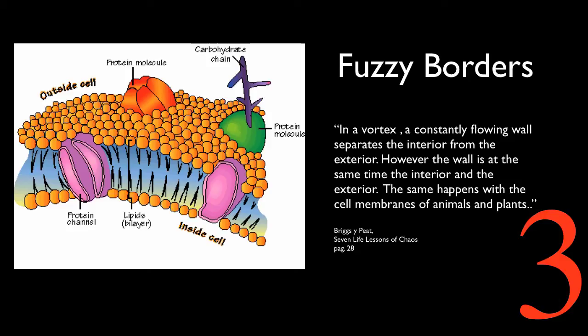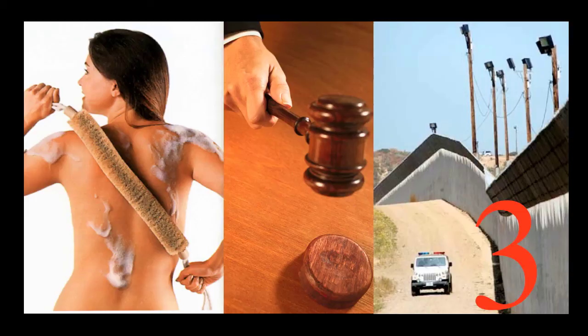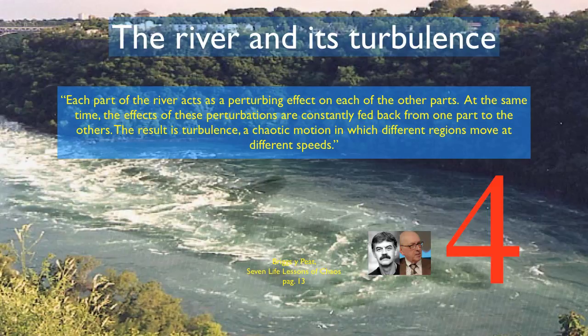In a vortex, a constantly flowing wall separates the interior from the exterior. However, the wall is at the same time the interior and the exterior. The same happens with cell membranes of animals and plants. Our bodies do not have a clear border; the visible cells on our skin are already dead. Warren McCulloch used to ask his students: is the cane a part of the blind person? We know now that the cane is mapped by the blind man into his brain as part of himself, the same as a limb. Legal persons have fuzzy borders too. People often go to court to have a court determine the extension of their wealth. Not even countries have clearly defined borders — they are usually full of holes and gaps used by migrant workers to find jobs.